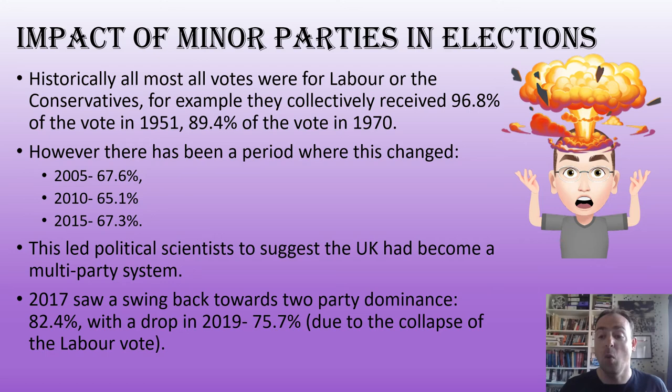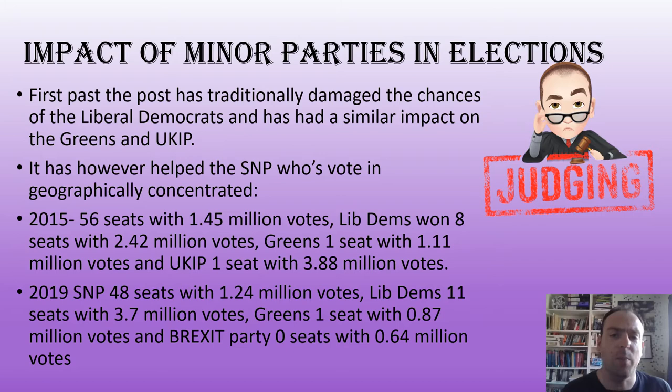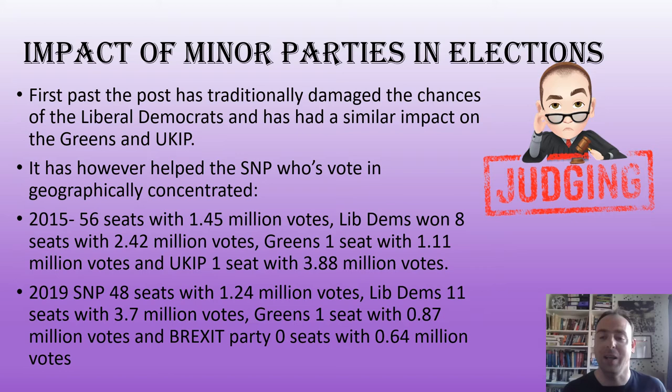Looking at the impact of these minor parties in elections, there is a real division, because traditionally the minor parties — including the Liberal Democrats, but also the Greens and UKIP — are really badly affected by the first-past-the-post system. They pick up votes but those votes tend to be dispersed across the whole country, not concentrated in certain areas. So they might get a decent number of votes and come second in many constituencies without actually winning seats.